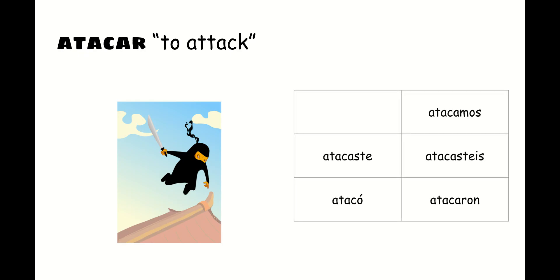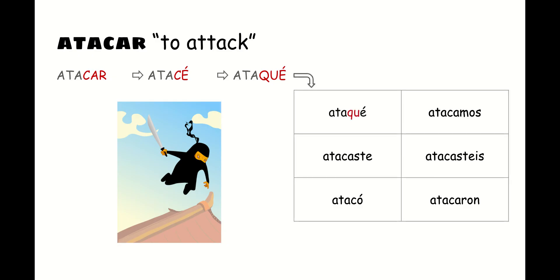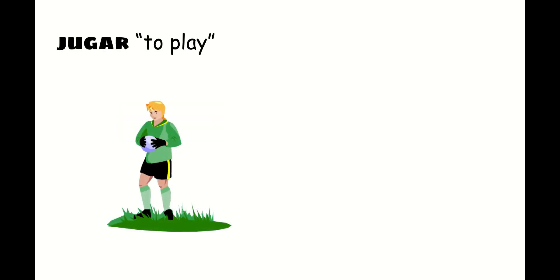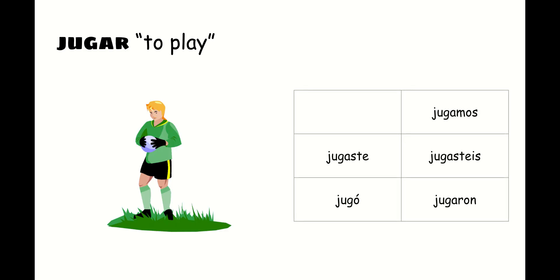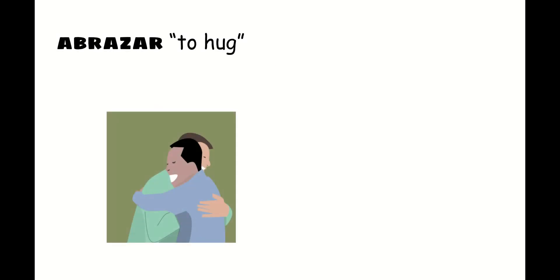Here are some examples. Atacar means to attack. All forms except the yo form can be conjugated normally with a 'c' — don't spell those with q-u. But to make the yo form, since atacar ends in -car, we add the -é ending and change the 'c' to q-u, giving us 'yo ataqué' — I attacked — instead of 'yo atacé' with a c. Another example of a -gar verb is jugar, which means to play. You can conjugate all forms that are not the yo form regularly with a 'g'. But to conjugate the yo form, since it ends in -gar, you add the ending and change the 'g' to g-u, so that we get 'jugué'.